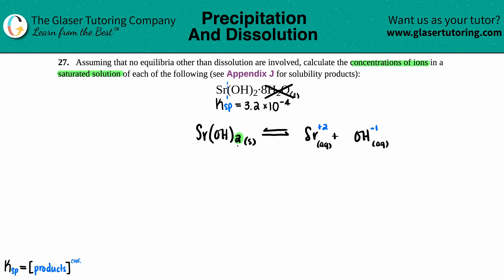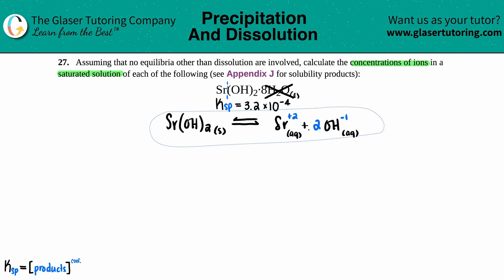Let's put the aqueous signs here because we have charges. And now let's just balance. I notice that I have two hydroxides, so I do have to put a two in front of the OH, and then one strontium for each side, so we're good here.